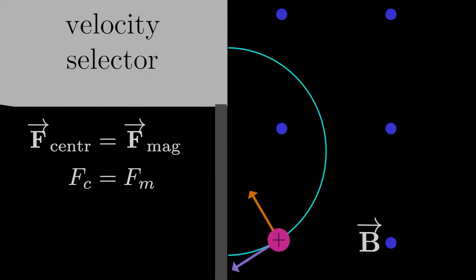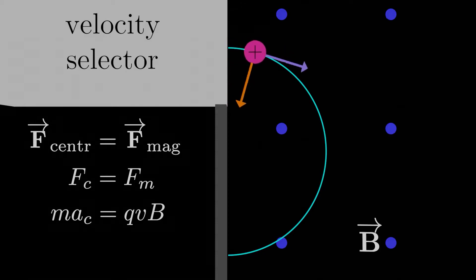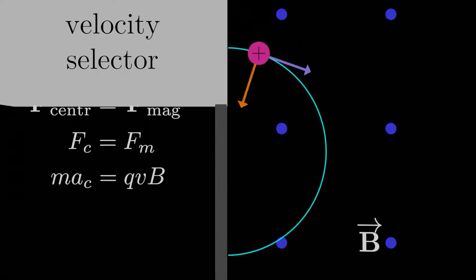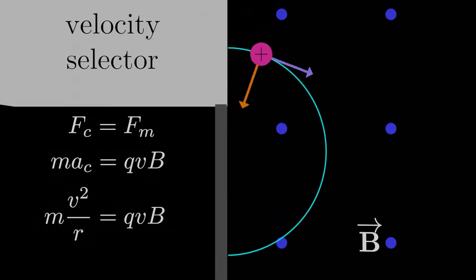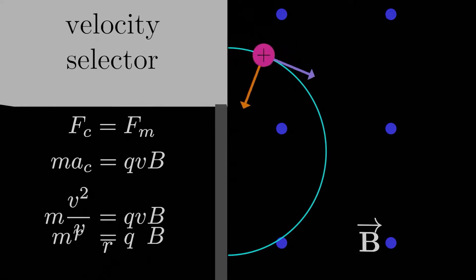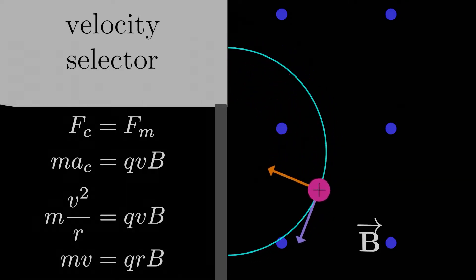The magnitude of the centripetal force is the mass times the centripetal acceleration, and the magnitude of the magnetic force is qvB here, since the velocity and magnetic field vectors are always at right angles to each other. We know the centripetal acceleration is just v squared over r, so we have mv squared over r is equal to qvB. We can divide one of the v's out and multiply by r on both sides and we have mv is equal to qrB.